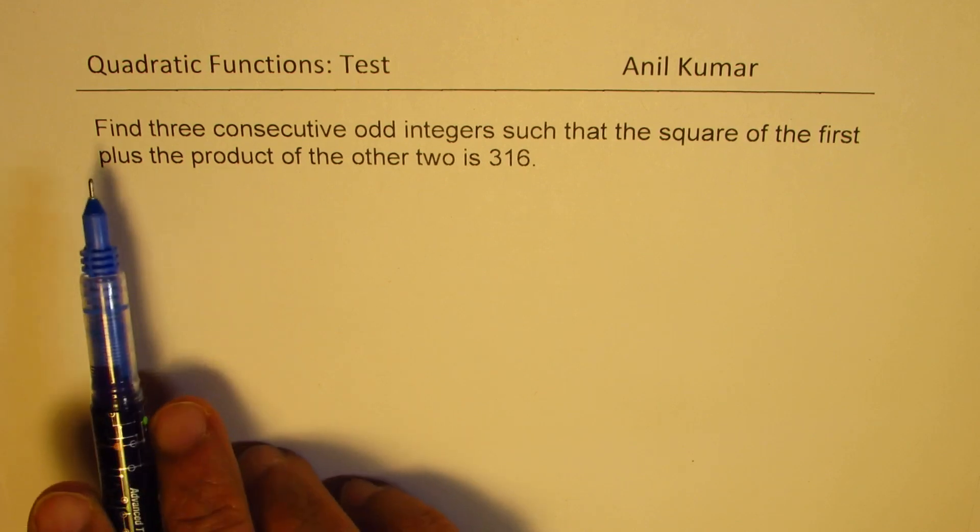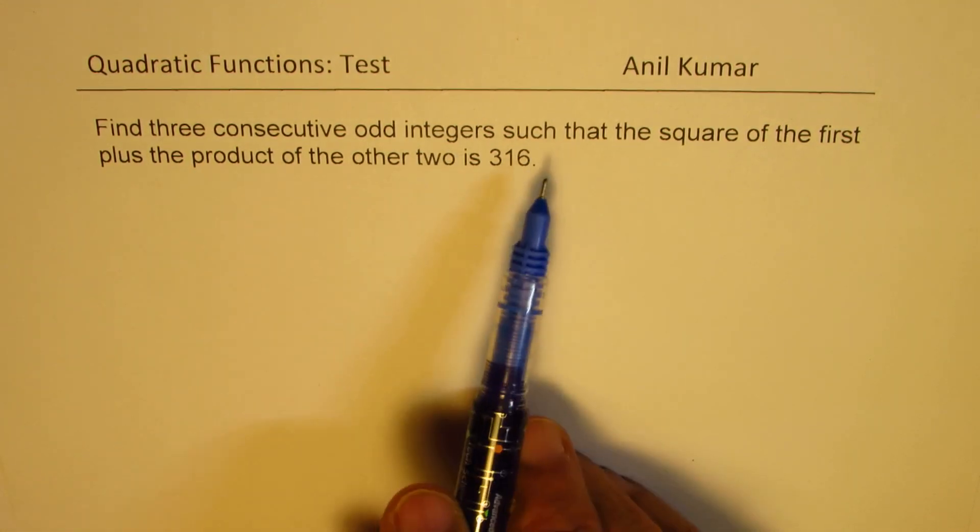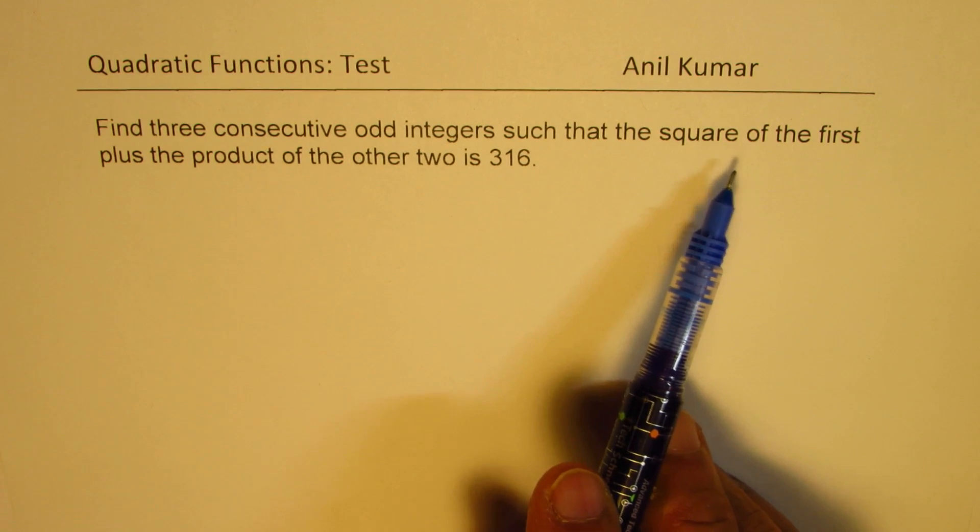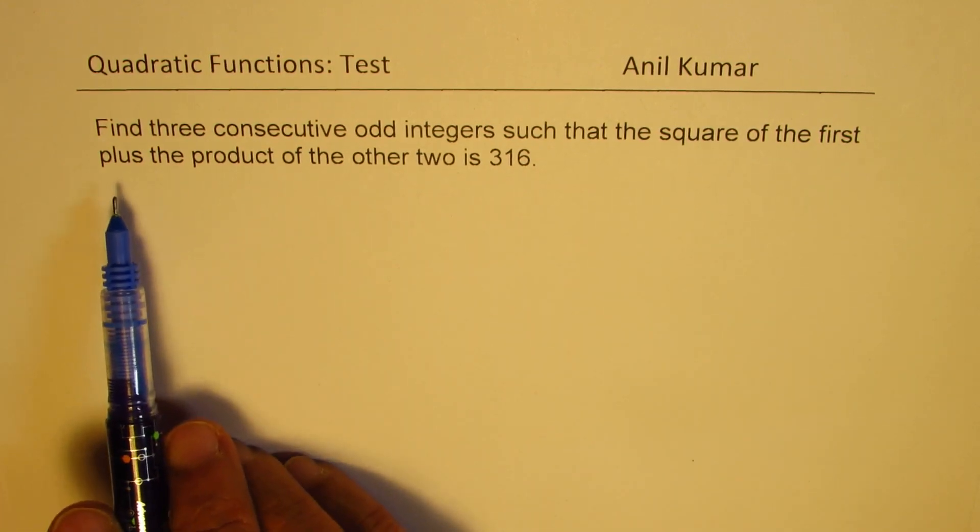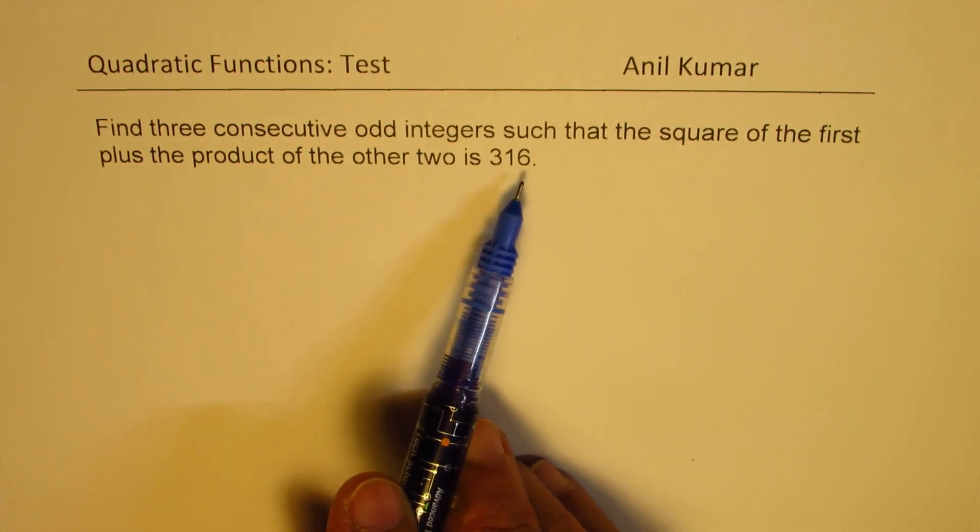The question is: find three consecutive odd integers such that the square of the first plus the product of the other two is 316.